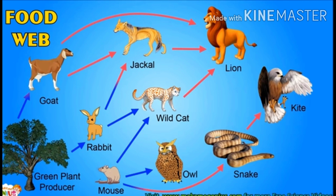Look at the rat — it can be eaten by an owl, a wild cat, or a snake. Look at the plants — they can be eaten by a rabbit or a goat. These are complex, interconnected food chains, and this is called a food web, because they are interconnected like a spider web. Most animals are part of more than one food chain and eat more than one kind of animal to meet their food requirements.